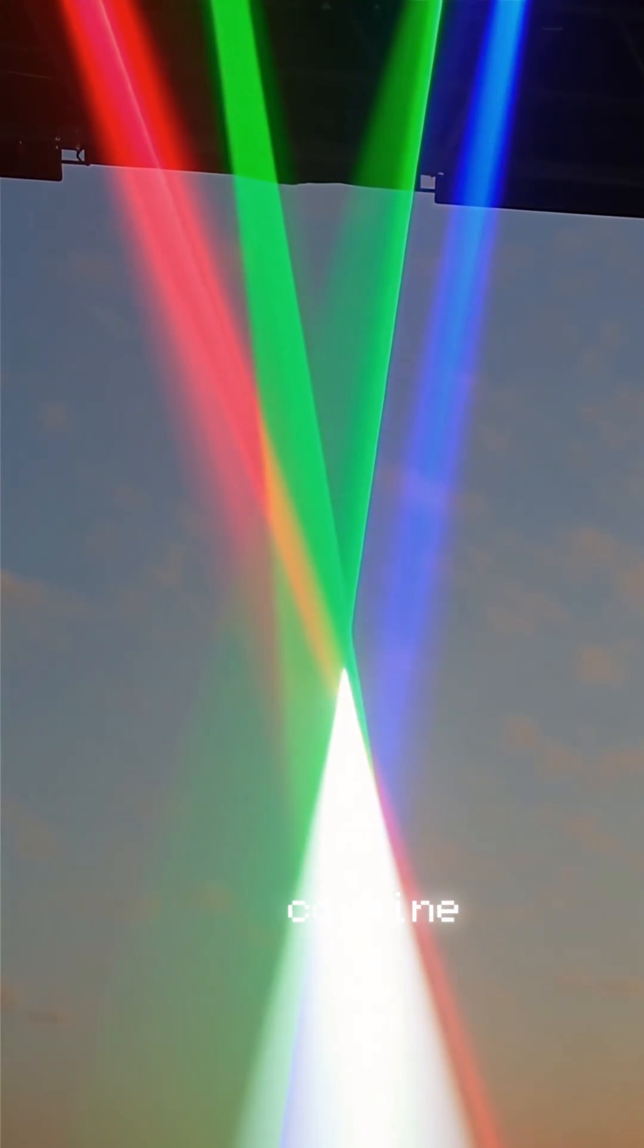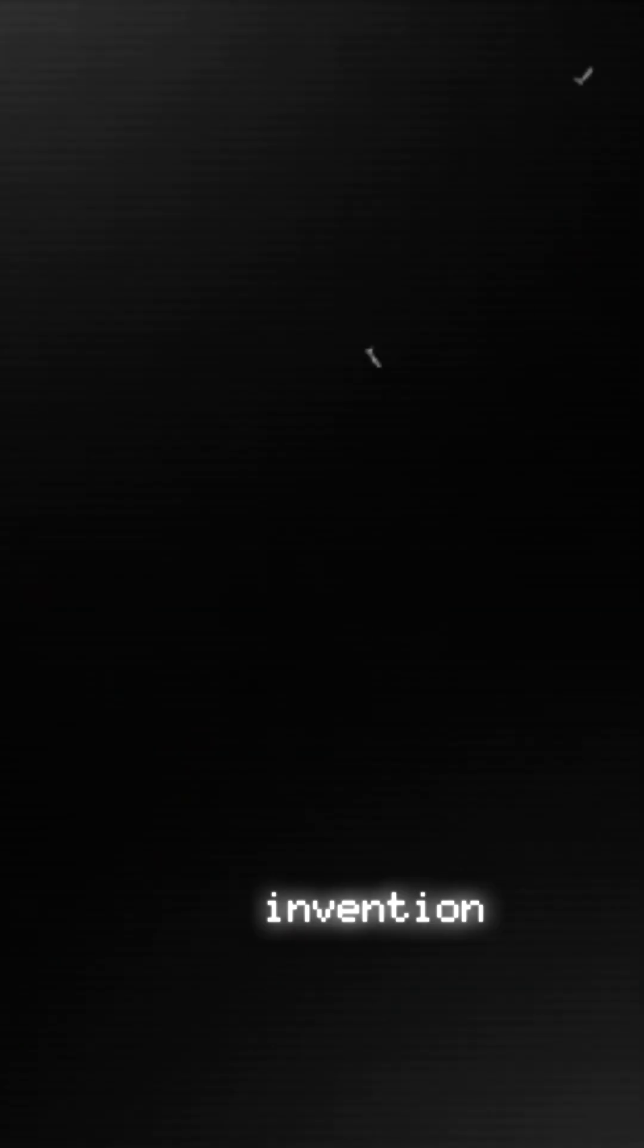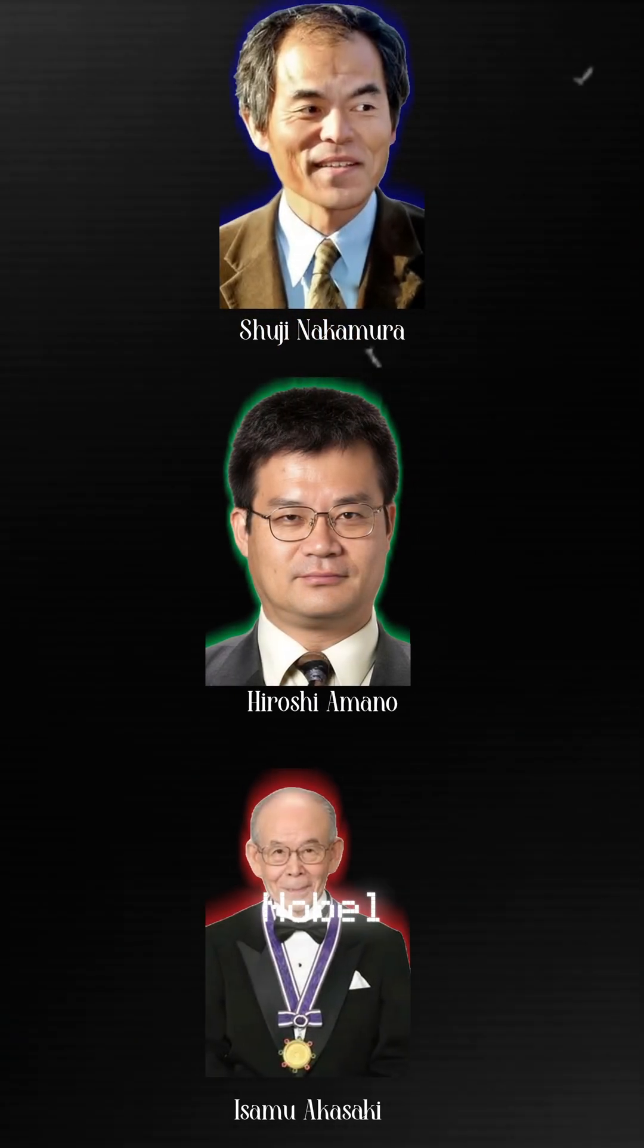With blue, we could finally combine it with red and green to create white light, the basis for all modern LED lighting. This invention earned Nakamura and his colleagues the Nobel Prize in Physics, changing the world forever.